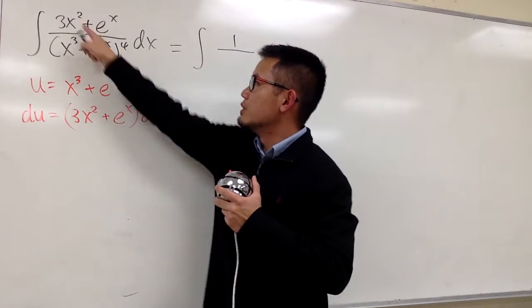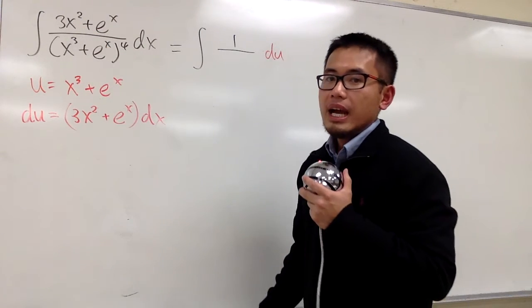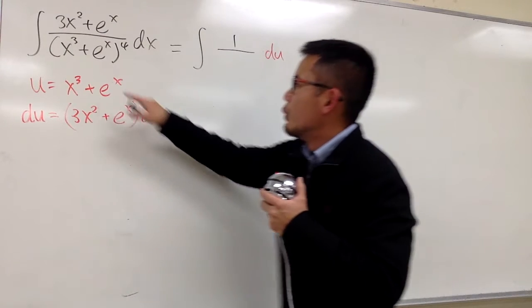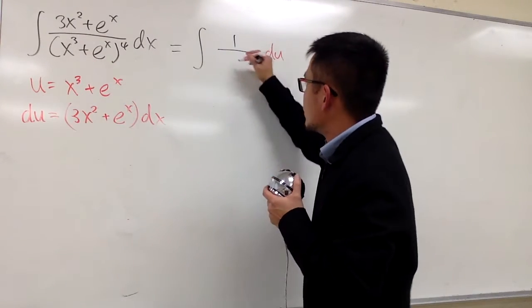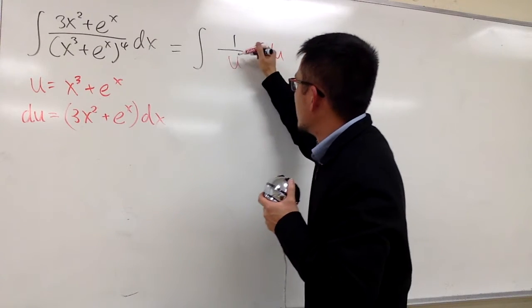Once again, du is all this, which is exactly the top. And on the bottom here, we have x to the third power plus e to the x, which is the u. So we have u to the fourth power, like that.